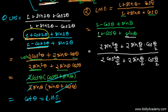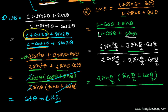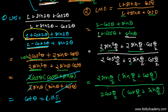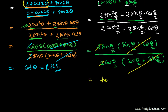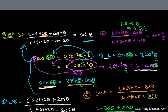Now let's take common factors. In the numerator, 2 sin(θ/2) is common — taking it outside leaves sin(θ/2) + cos(θ/2). In the denominator, 2 cos(θ/2) is common — taking it outside leaves cos(θ/2) + sin(θ/2). We can cancel: 2 and 2 cancel, and (sin(θ/2) + cos(θ/2)) cancels with (cos(θ/2) + sin(θ/2)). We're left with sin(θ/2) over cos(θ/2), which is tan(θ/2) — and that's our right-hand side. We got it!